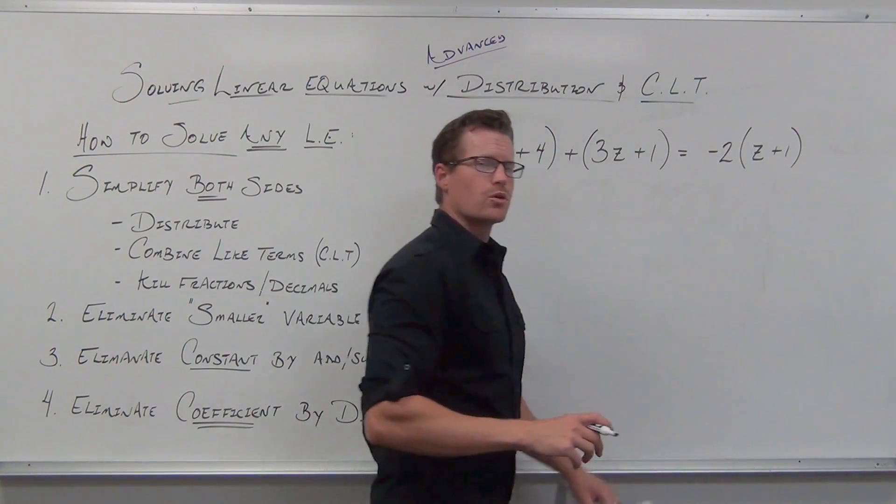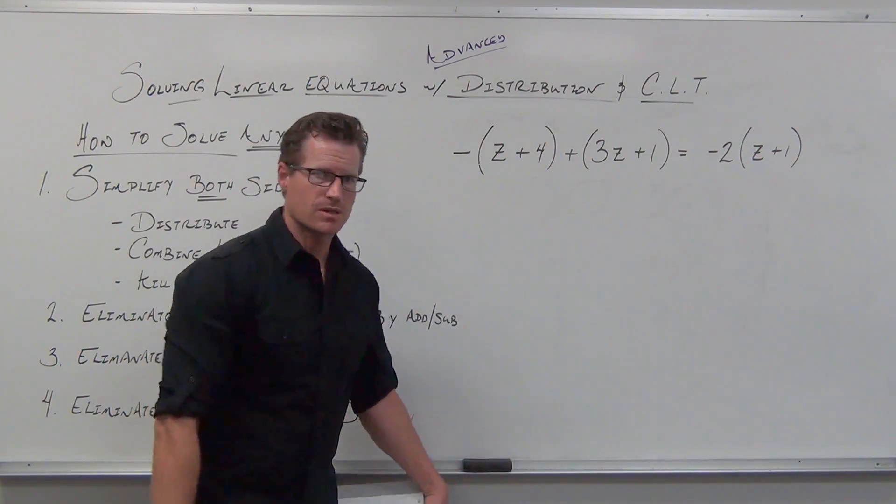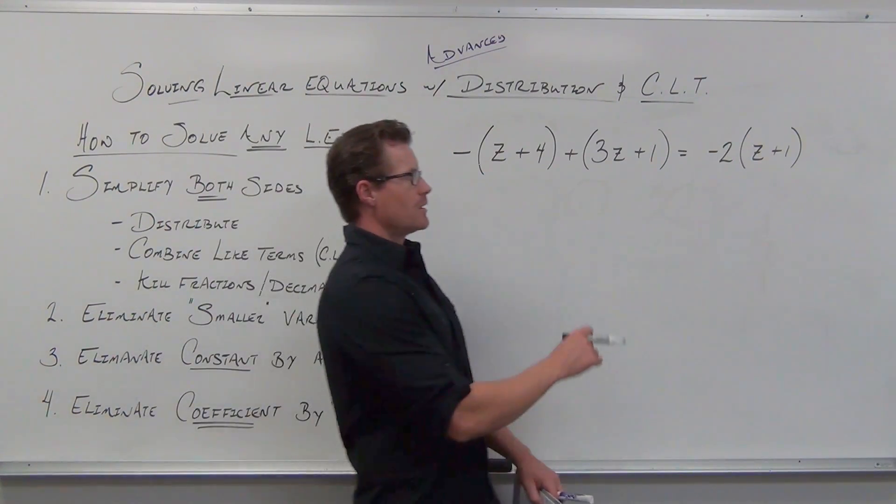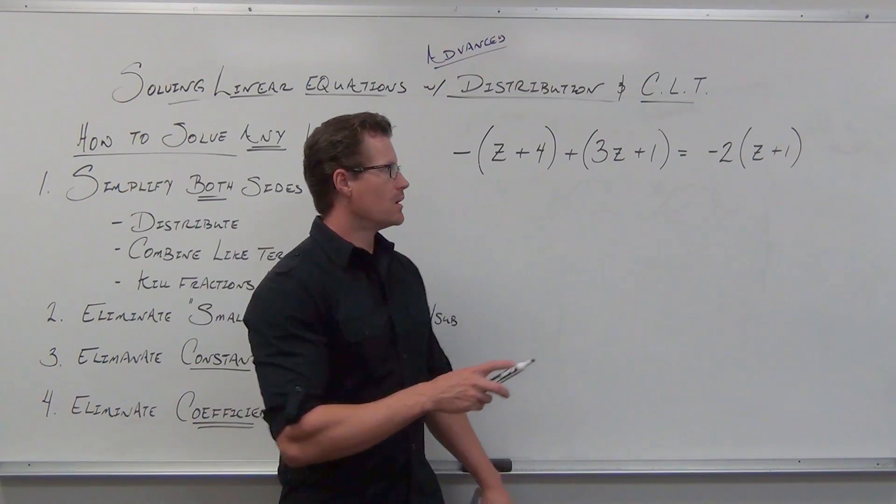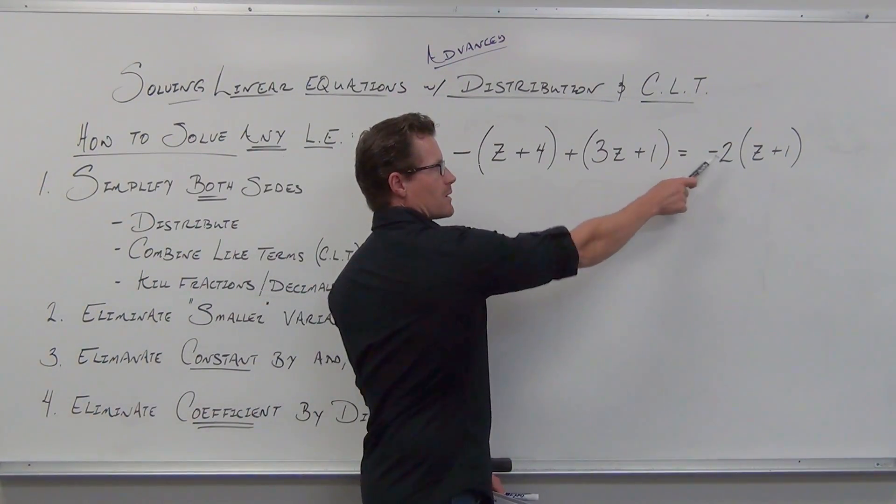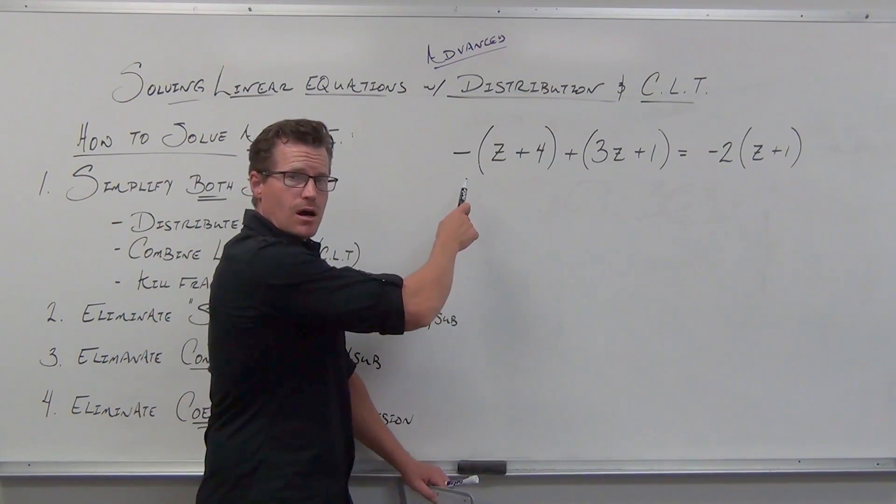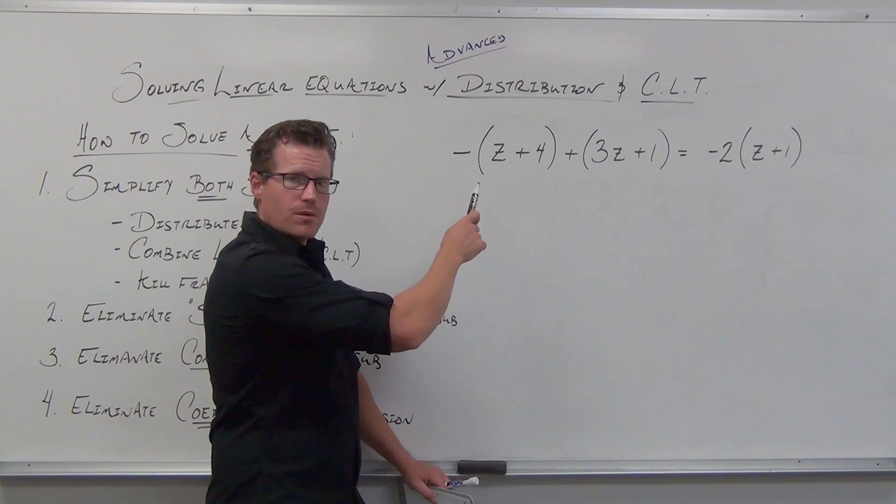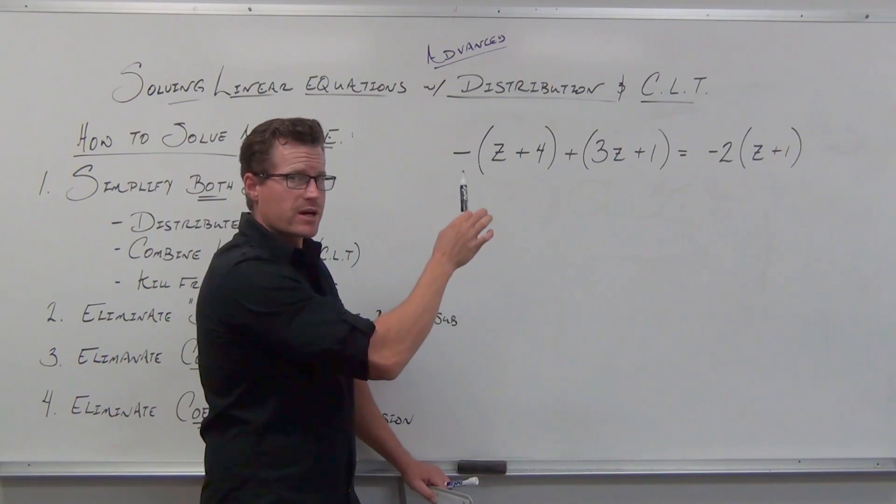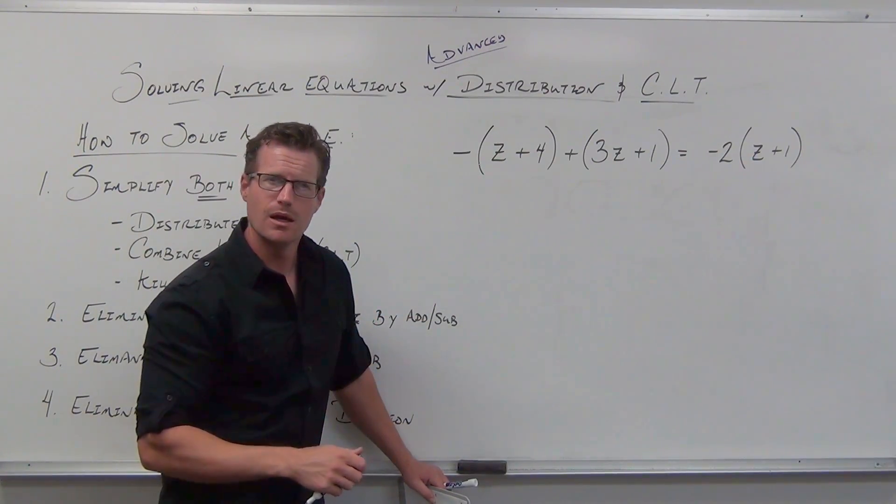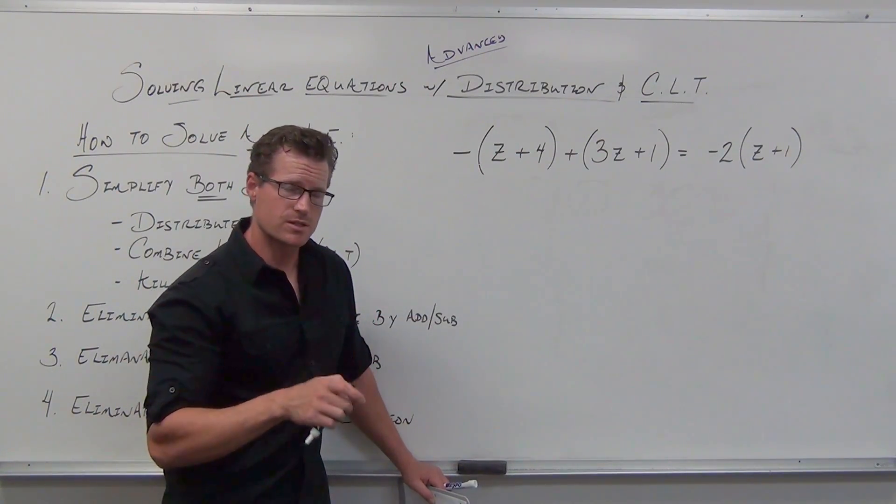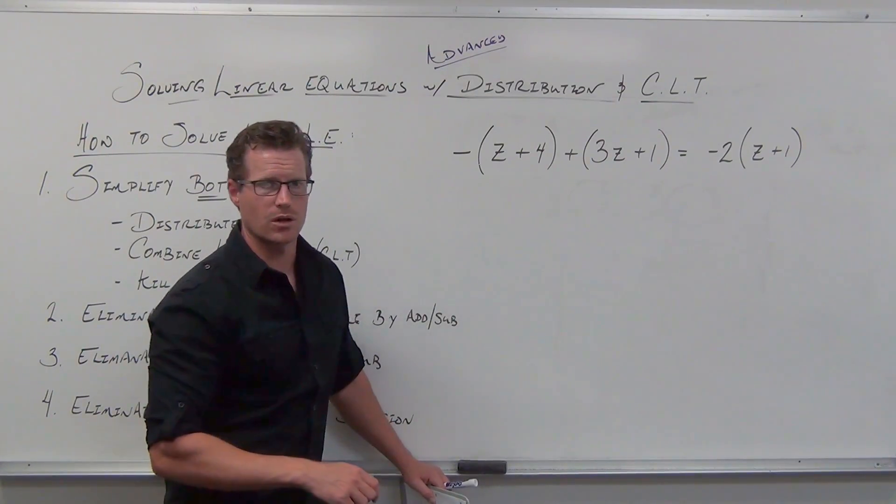I'll make one real quick mention before you actually pause the video and do it. Your distribution is going to be your first step. I think we all know that. When you distribute this, it's pretty clear. When you distribute here, it might not be. But think about what number is always in front of a variable or always in front of a parentheses. So pause me right now if you can. Try this on your own and then come back to it.